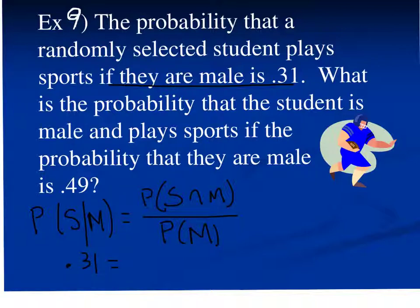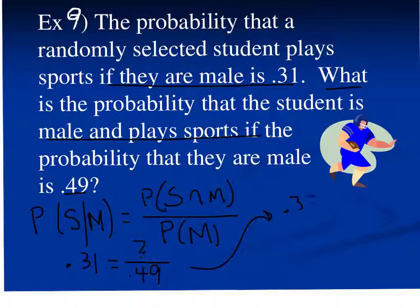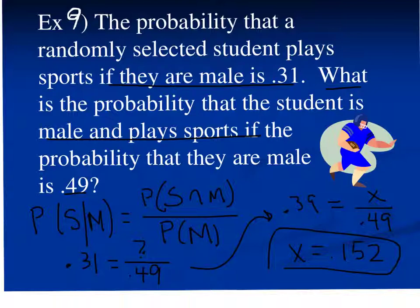What I'm trying to find is the probability that the student is male and plays sports — the top part of my formula — so I put a question mark there. Divided by the probability that they are male, which is 0.49. Rewriting this: 0.31 equals x over 0.49. Multiplying those two probabilities together, x equals 0.152, which represents the probability that they play sports and are male.